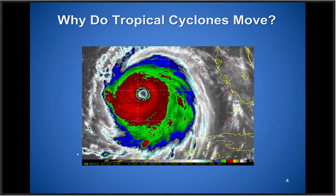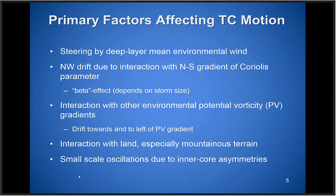There are multiple factors that play into tropical cyclone motion. The primary one is steering by the deep layer mean environmental wind, which controls roughly three-quarters to eighty percent or more of the TC's motion. There's also a northwestward drift in the Northern Hemisphere due to the interaction with the Coriolis parameter gradient — called the beta effect — which scales with storm size. There are also interactions with environmental PV gradients, a tendency to drift toward the left of the PV gradient in the Northern Hemisphere, interactions with mountainous terrain like Hispaniola, Hawaii, or Taiwan, and small-scale oscillations due to inner-core convective asymmetries as the eye forms and convection evolves.